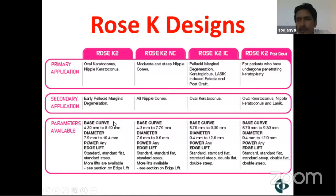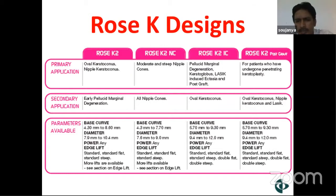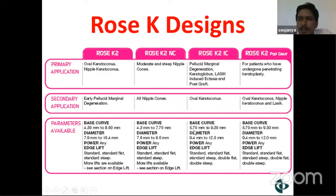Parameters available in the trial set: Rose K2 base curves are 4.3 to 8.6 mm, diameter 7.9 to 10.4 mm, with edge lift in standard, standard flat, and standard steep. Rose K2 NC base curves are 4.3 to 7.70 mm, diameter 7.6 to 9 mm. Rose K2 IC base curves are 5.7 to 9.3 mm, with larger diameters of 9.4 to 12 mm. For Post Graft, base curves are 5.7 to 9.3 mm and diameters 9.4 to 12 mm.